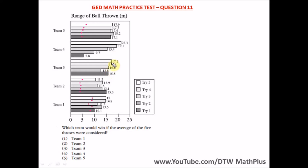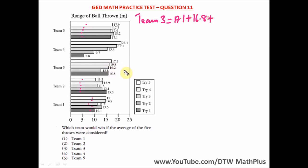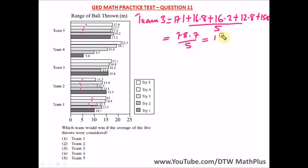To find the average, sum up the five throws then divide by 5. For team 3: 17.1 + 16.8 + 16.2 + 12.8 + 15.8 = 78.7, divided by 5, which gives us 15.74.